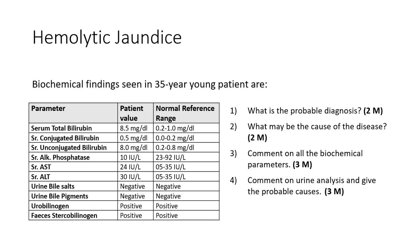Coming to hemolytic jaundice. Lab report of a 35-year-old patient: total bilirubin is raised, conjugated is also raised but unconjugated bilirubin is more. Liver enzymes — alkaline phosphatase, AST, ALT — are all normal. Bile salts and bile pigments are negative. Urobilinogen is positive and fecal urobilinogen is positive, indicating no obstruction. The diagnosis is clearly hemolytic jaundice.